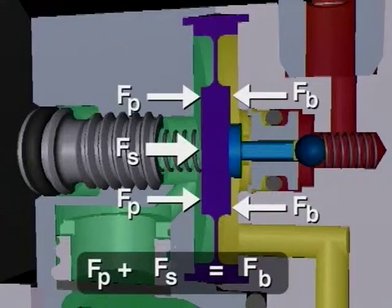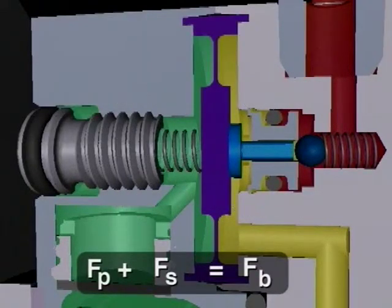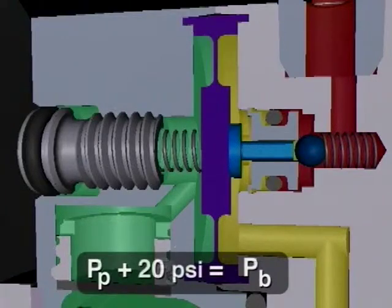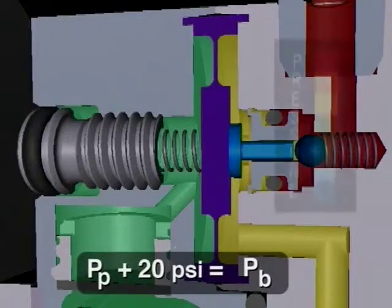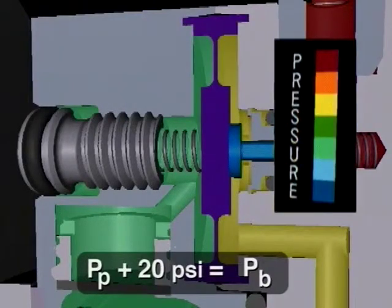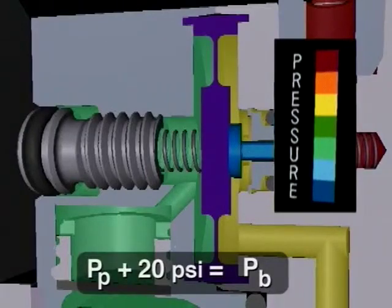Since the forces on either side of the diaphragm are working on the same surface area, this means that the barrier gas pressure at the diaphragm and the faces is 20 psi greater than the process pressure. The fluid colors indicate this relationship: the yellow barrier gas pressure is higher than the green process pressure.